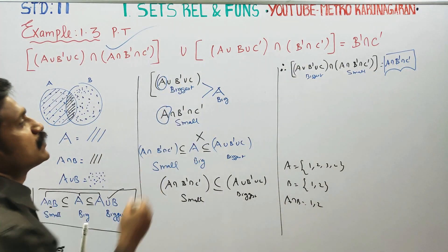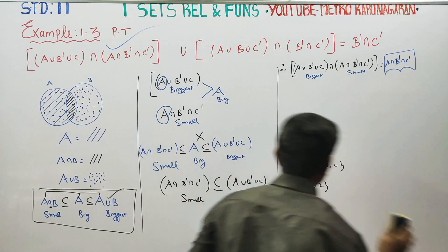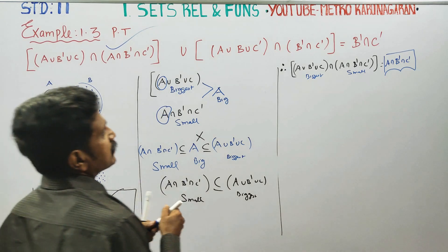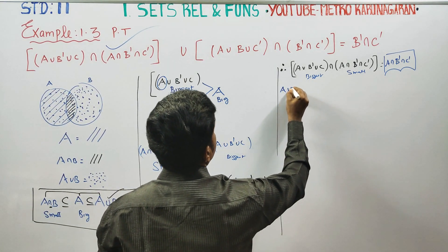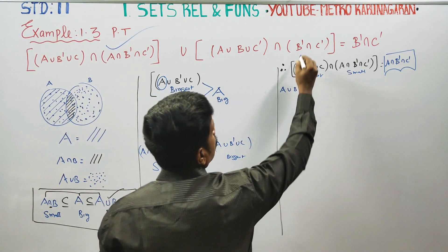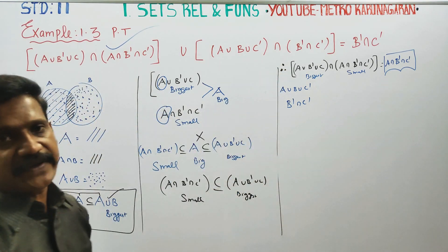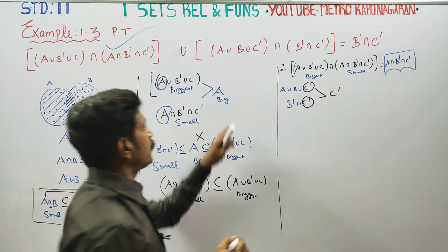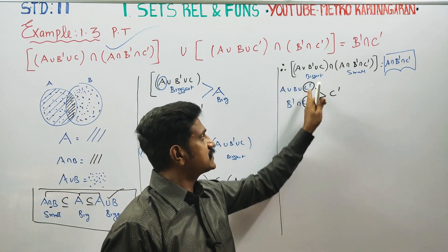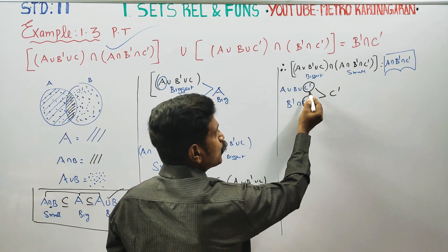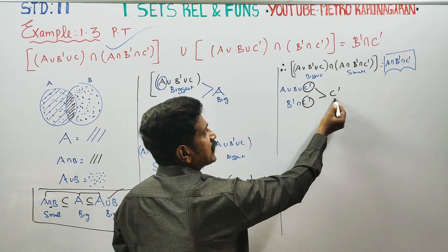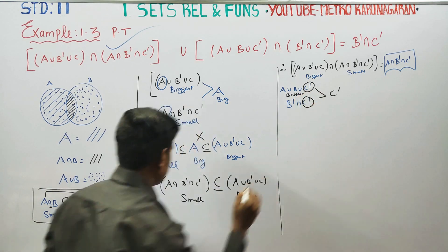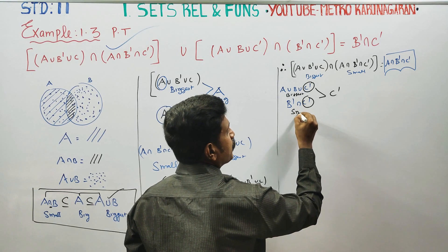This bracket is over. After completing this bracket, we will go to the other bracket. A union, B union, C'. B' intersection C'. Common is C'. Common is A. Union is over. Intersection is over. This is the biggest. Intersection is the smallest.